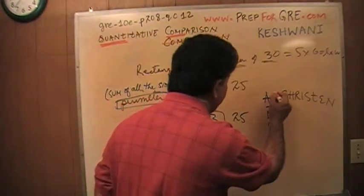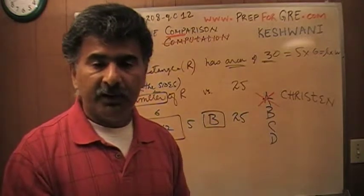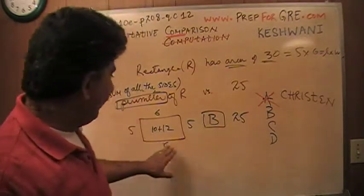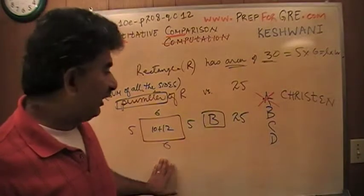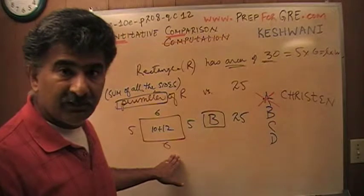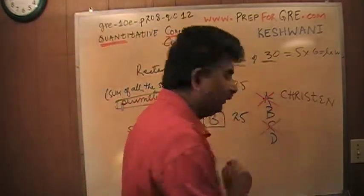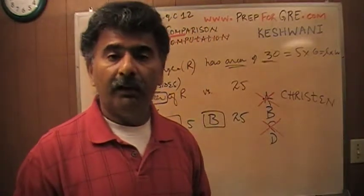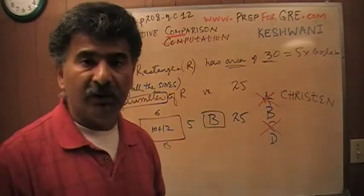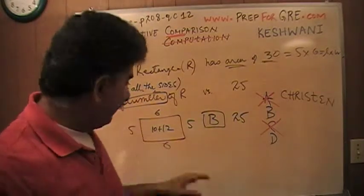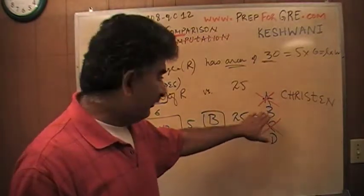Based on the work I've done so far, I know now that the answer is not A. Why? Because A would have meant that the quantity in column A is always bigger. But the quantity in column A could not possibly be always bigger because I found one instance when it's not. That rules out A. It also rules out C. Because C would have meant that the two quantities are always equal. The two quantities in the two columns cannot possibly be always equal because I have found one instance when they are not. That rules out C. The answer is either B or D.